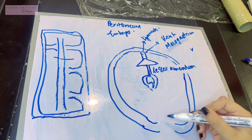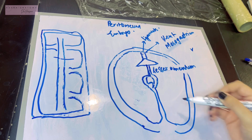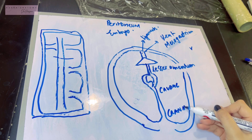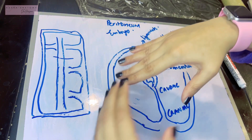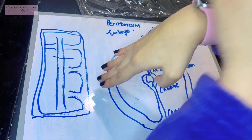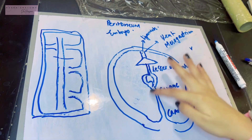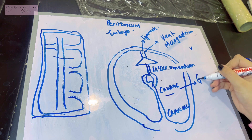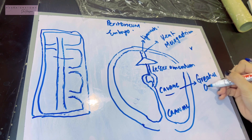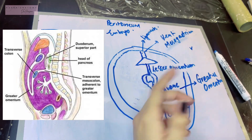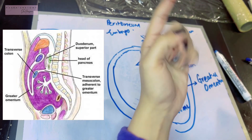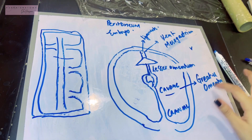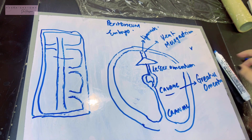Now for the dorsal mesogastrium: divide it into a large caudal part and a small cranial part. The caudal part of the dorsal mesogastrium becomes the greater omentum — it gets super enlarged, goes down all the way and folds back up, forming that characteristic double fold. This caudal part of the dorsal mesogastrium becomes your greater omentum.